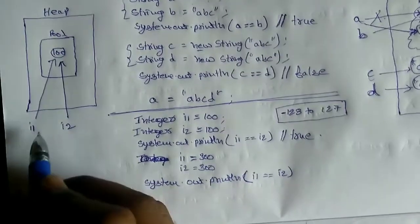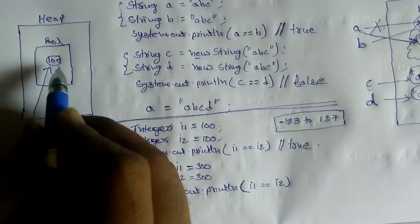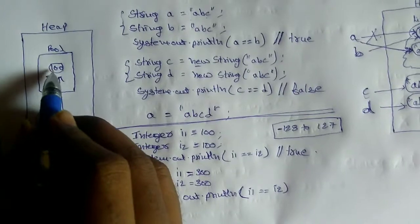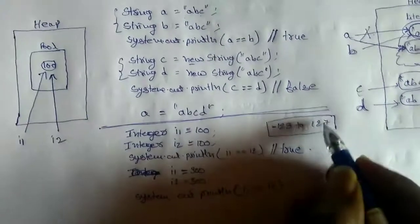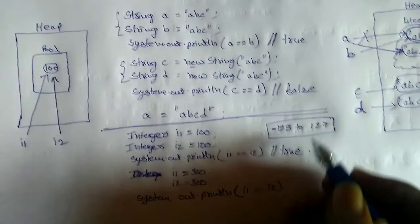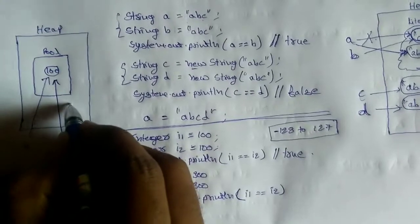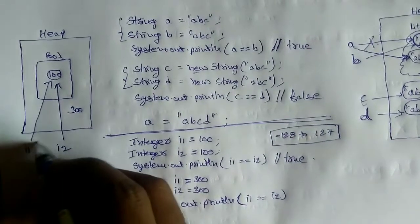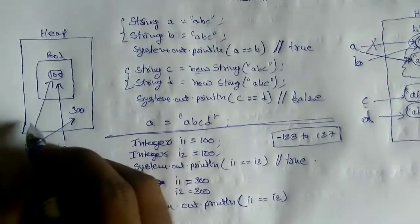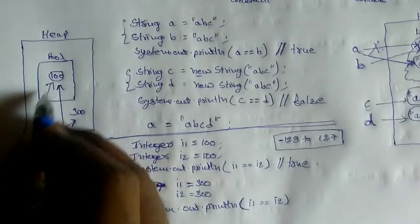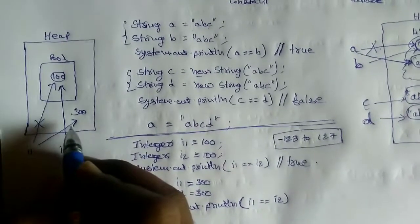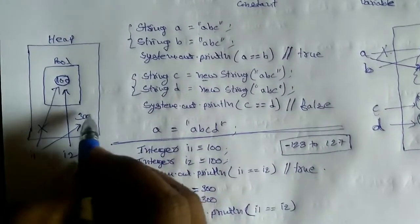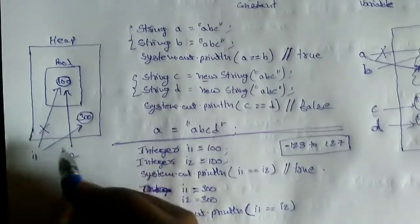The next step: i1 equal to 300. If you do i1 = 300, Java won't change the value in the pool — it won't change 100 to 300. Since 300 is out of this range, it will create 300 somewhere in the heap, and now i1 is pointing to this 300. This is called immutability — Java won't change the state of the existing object, but instead creates a new object with 300 and returns its reference to i1.